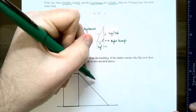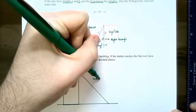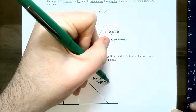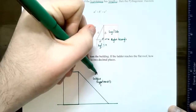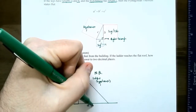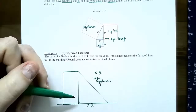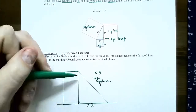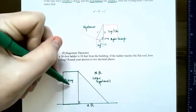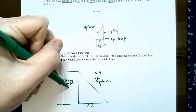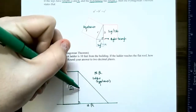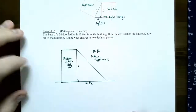Let's label the sides. The ladder is the hypotenuse of the right triangle, and it is 30 feet. The base of the ladder is 10 feet from the building — that's the bottom leg of the triangle. It is a right triangle because the building is vertical with the ground. We don't know the height of the building, so let's call it B feet. We can use the Pythagorean Theorem.